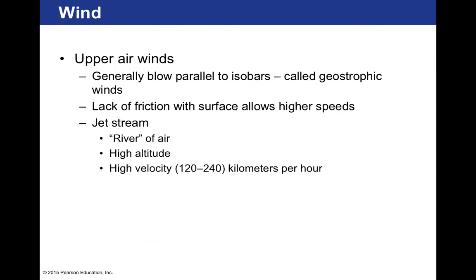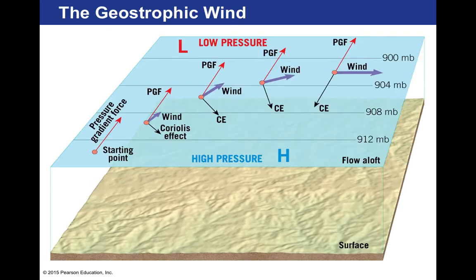Upper air winds generally blow parallel to isobars and are called geostrophic winds. The lack of friction with these upper air winds allows for higher speeds. A specific type called the jet stream is a river of air at very high altitude, moving at velocities in the range of 120 to 240 kilometers per hour.